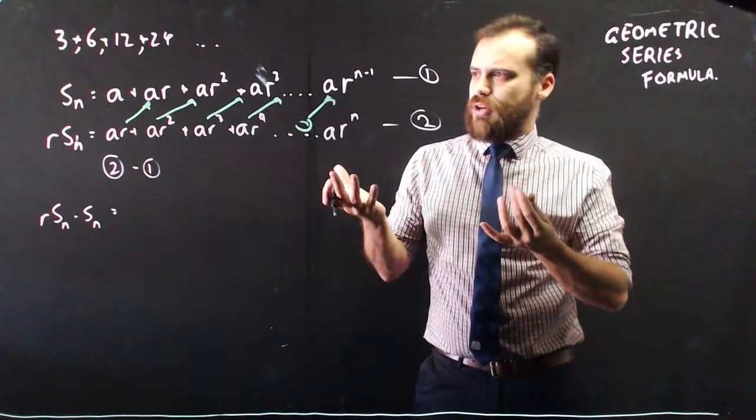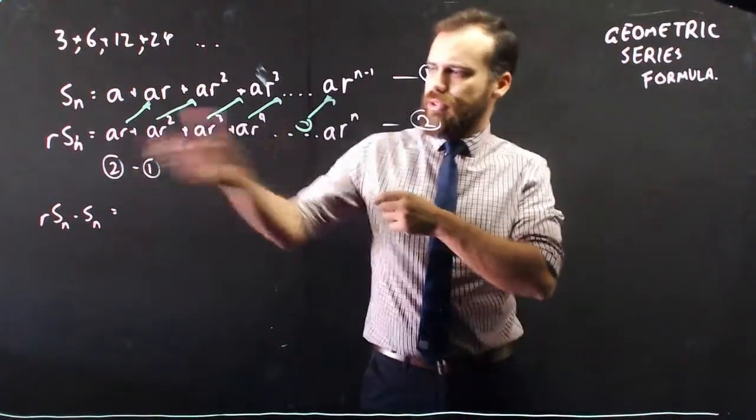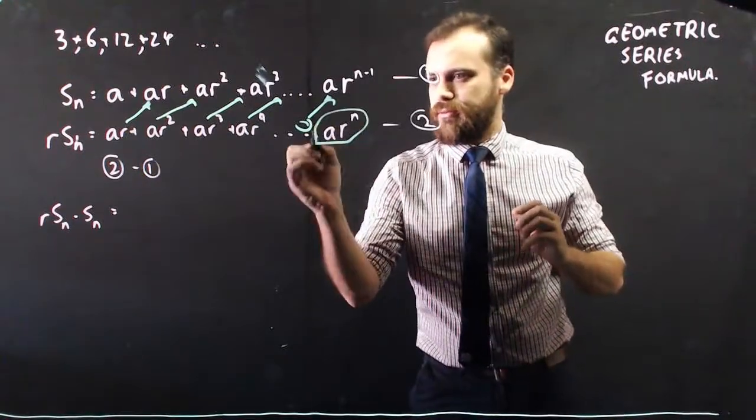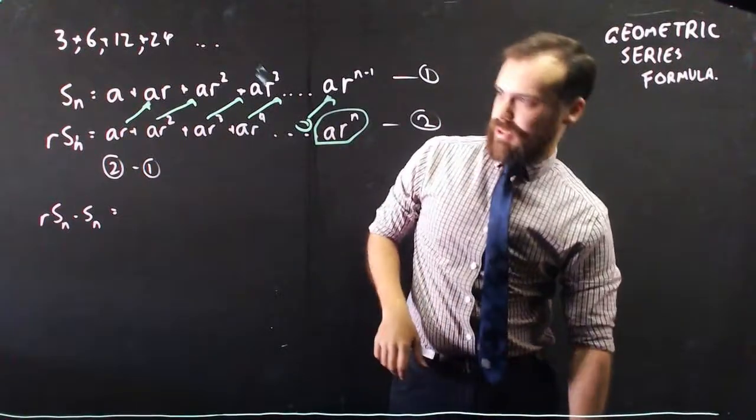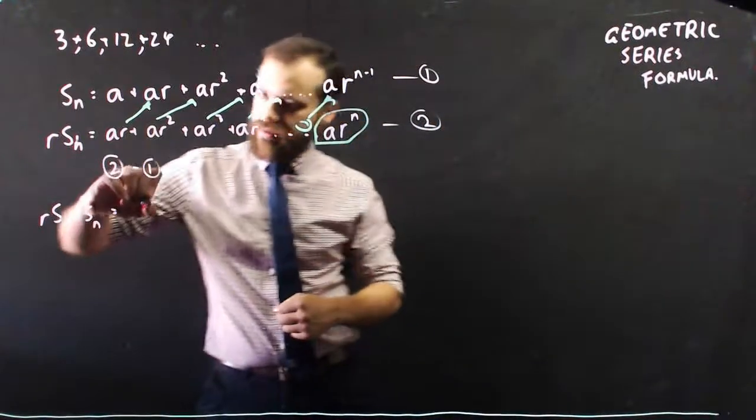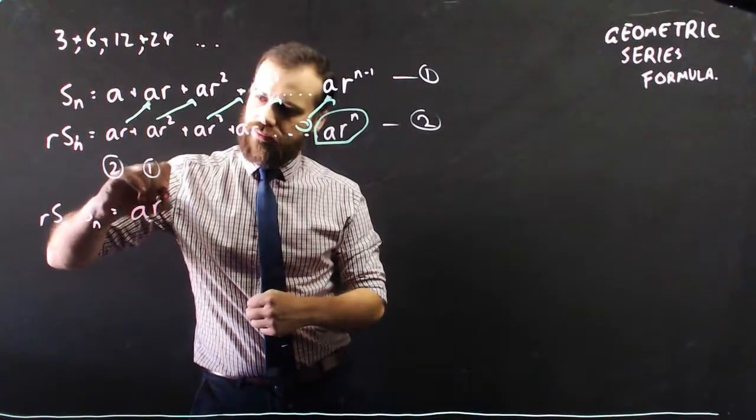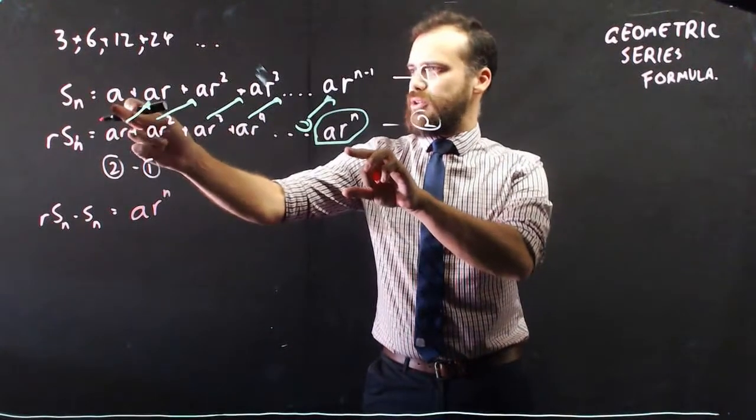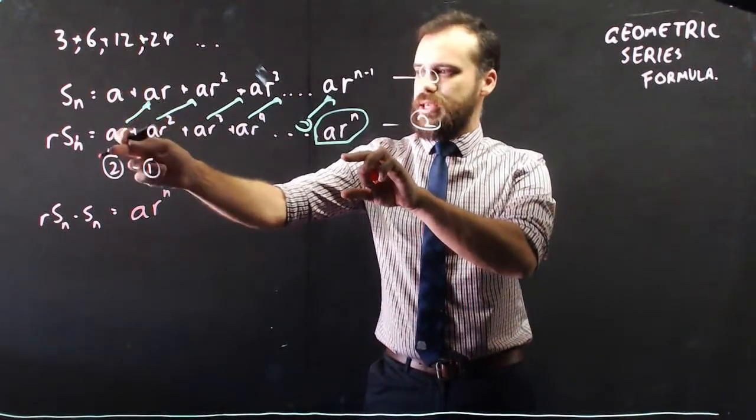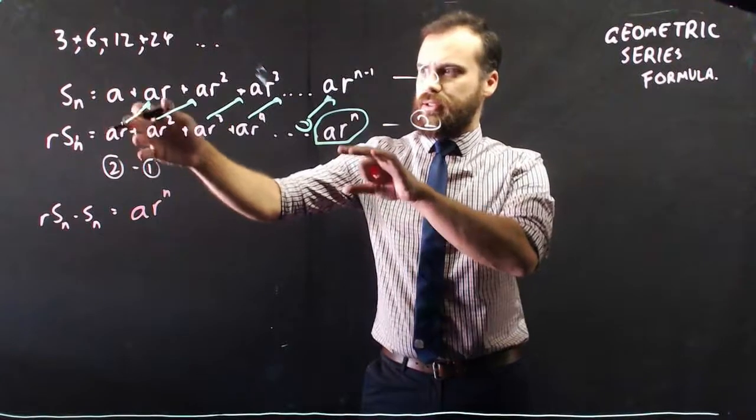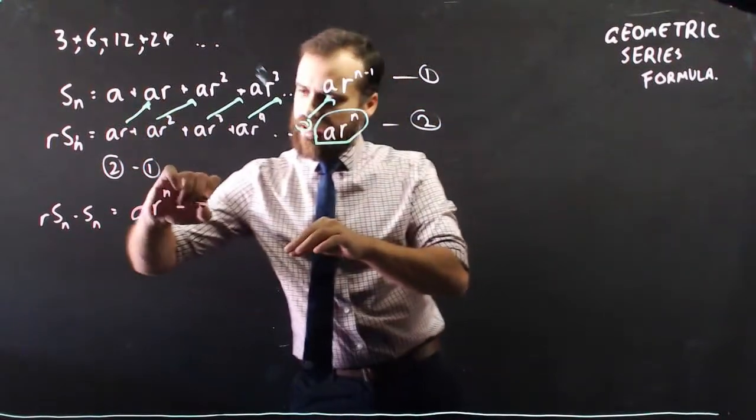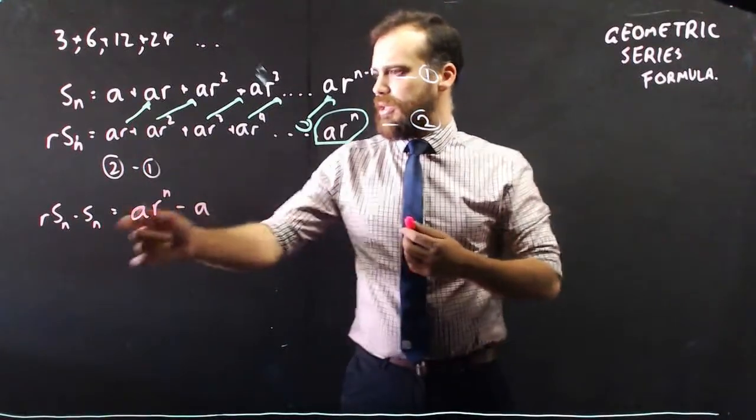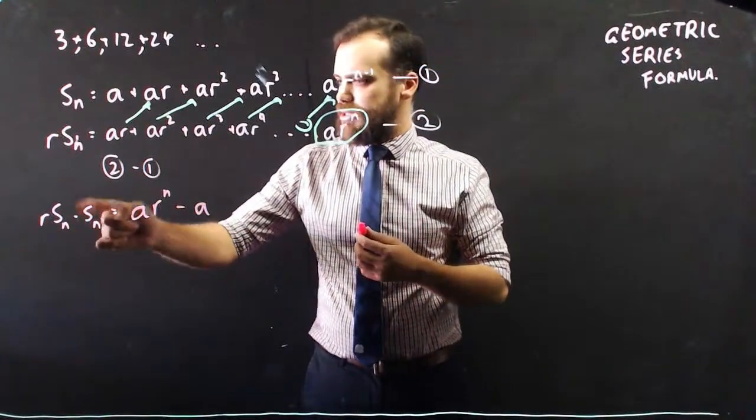Now, what's going to be left over? Well, not very much at all. The only things that are going to be left over are this guy. So a*r^n, and maybe this guy is subtracted from here, so it's going to be minus a. So now I have a*r^n minus a equals r*S_n minus S_n.